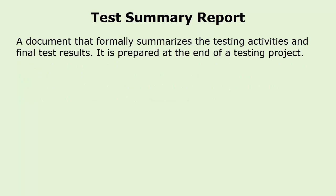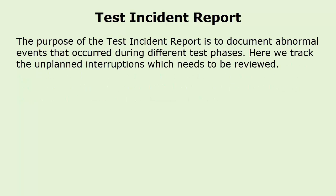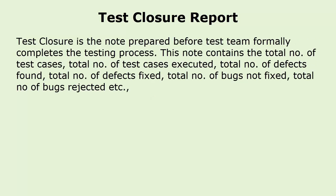Test summary report is a document that formally summarizes the testing activities and final test results. It is prepared at the end of a testing project. Test incident report documents abnormal events that occur during different test phases — here we track the unplanned interruptions which need to be reviewed.